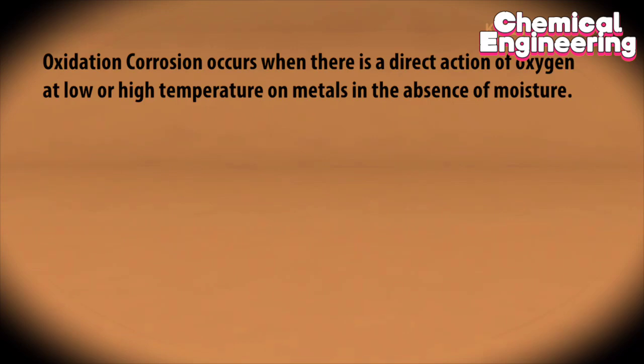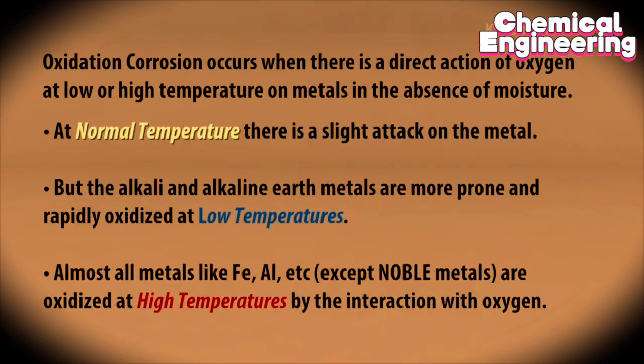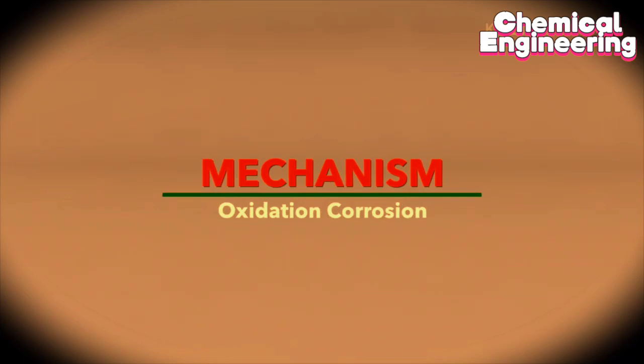Oxidation corrosion occurs when there is a direct action of oxygen at low or high temperature on metals in the absence of moisture. At normal temperature there is a slight attack on the metal, but the alkali and alkaline earth metals are more prone and rapidly oxidized at low temperatures. Almost all metals like iron, aluminum, etc., except noble metals, are oxidized at high temperatures by the interaction with oxygen.